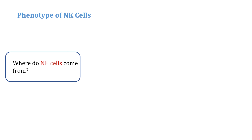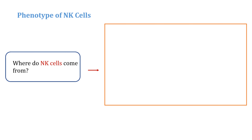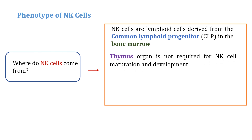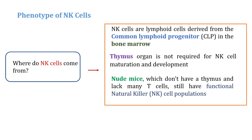Now, the phenotype of NK cells — where do NK cells come from? NK cells are distinct from other lymphocytes such as T cells and B cells in terms of their origin and function. NK cells are lymphocytes derived from the common lymphocyte progenitors in the bone marrow. Also, the thymus is not strictly required for NK cell maturation and development; there are examples of organisms without a thymus that still have a functional NK cell population.